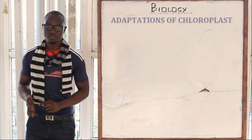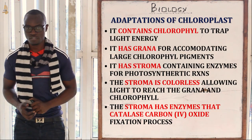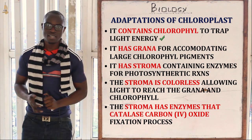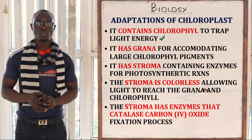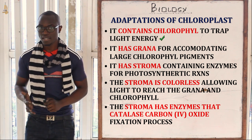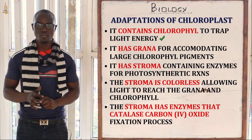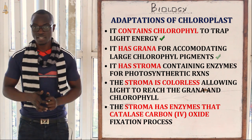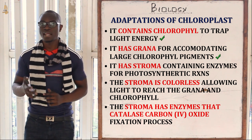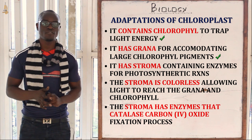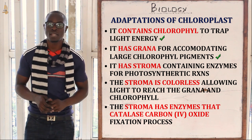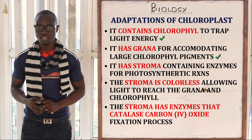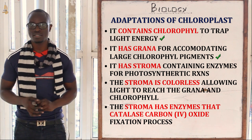Now let's look at the adaptations of the chloroplast to its function. The first adaptation is that it contains chlorophyll that traps sunlight for photosynthesis. The other adaptation is that it has grana which provide a large surface area for the accommodation of chlorophyll, and remember the grana is where the light stage of photosynthesis takes place.